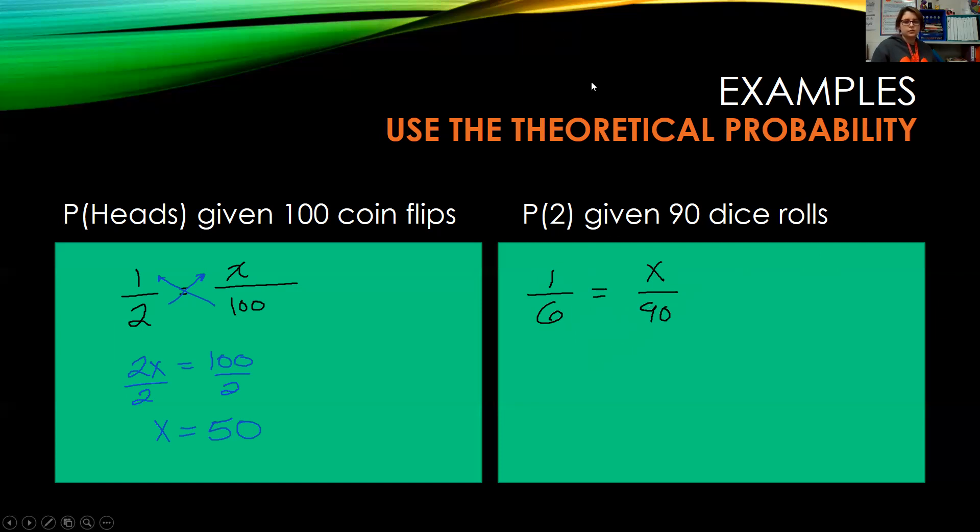So again, we're going to cross multiply. We end up with 6x equals 90. We're going to divide both sides by 6. x equals, let's see, 6 goes into 9 one time with 3 left over. 6 goes into 30 five times. So we would expect if we rolled a dice 90 times, it would land on 2 15 times.